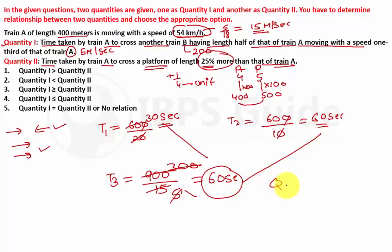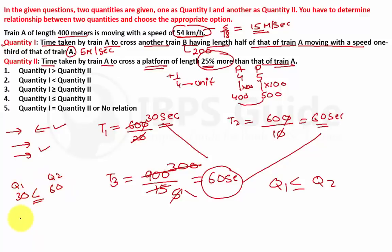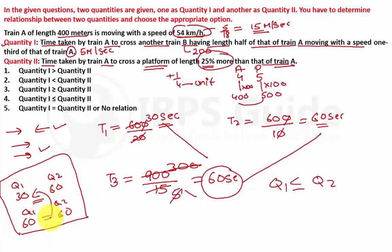Comparing: Quantity 1 has values 30 seconds and 60 seconds, while Quantity 2 is 60 seconds. So Quantity 1 is less than or equal to Quantity 2.